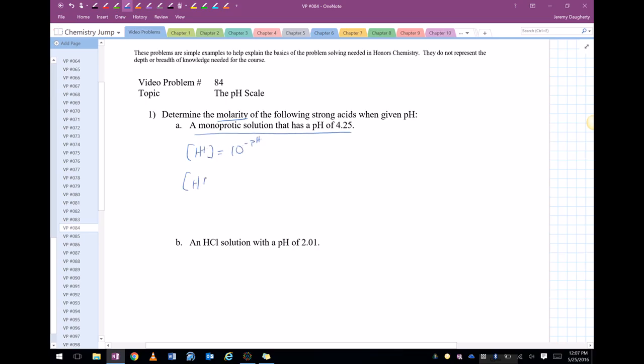Concentration of hydrogen ion is equal to 10 to the negative 4.25. So you just plug it into your calculator there with the 10 to the X button. 10 to the negative 4.25 and I get a value of 5.62. I only want two sig figs, so 5.6 times 10 to the negative 5th. So that's the molarity.